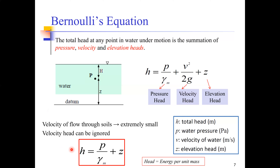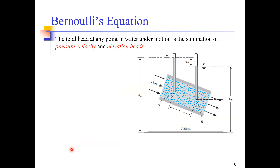So in this simplified case, the velocity head disappears, and when talking about the flow of water through soil, the total head is simply the addition of the pressure head and the elevation head. Now let's look at a slightly more complicated case.